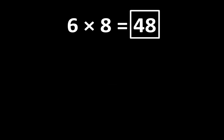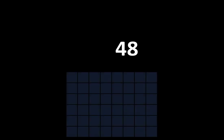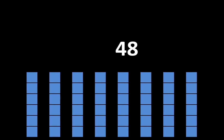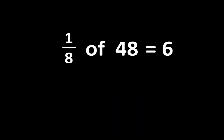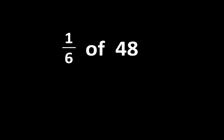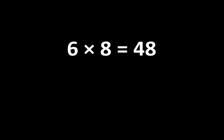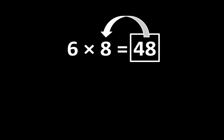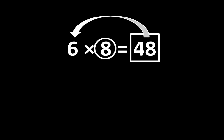6 times 8 is equal to 48, and there are many important ideas related to the number 48. If we divided 48 into 8 equal parts, each part would be 1/8 of 48, and 1/8 of 48 is equal to 6. And if we divided 48 into 6 equal parts, each part would be 1/6 of 48, and 1/6 of 48 is equal to 8. You may also notice that 48 is greater than both 6 and 8. 48 is 8 times greater than 6, and 48 is also 6 times greater than 8. There are many relationships among these numbers.